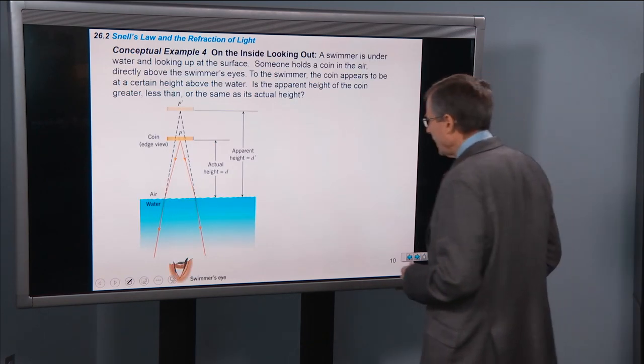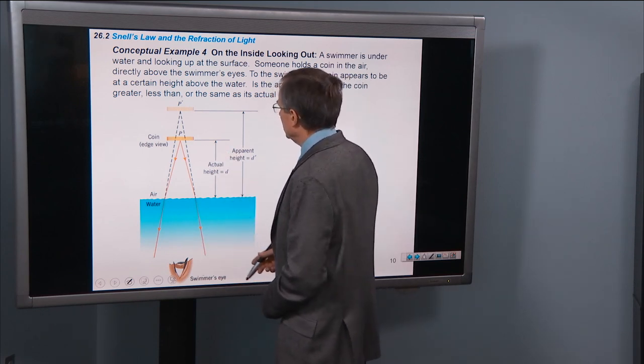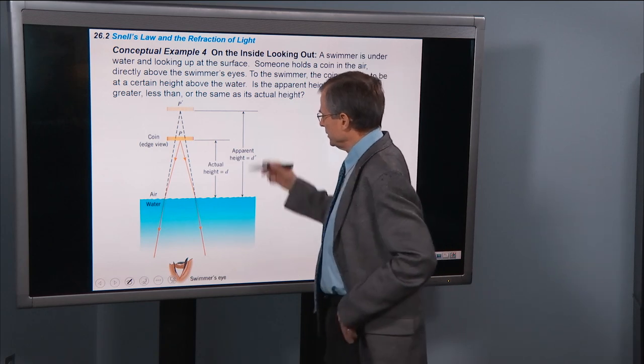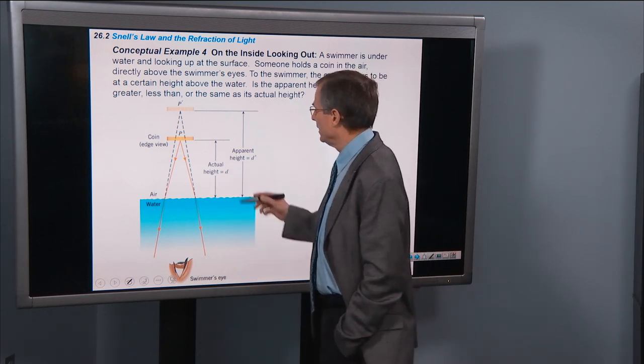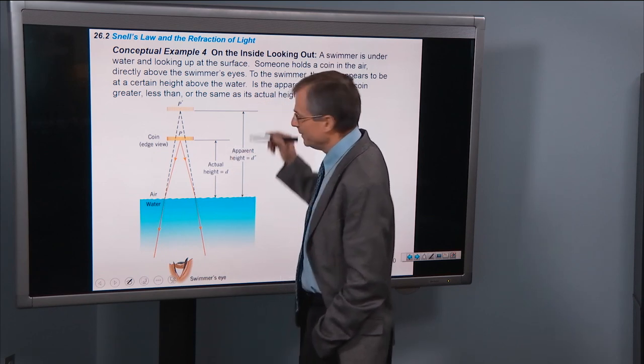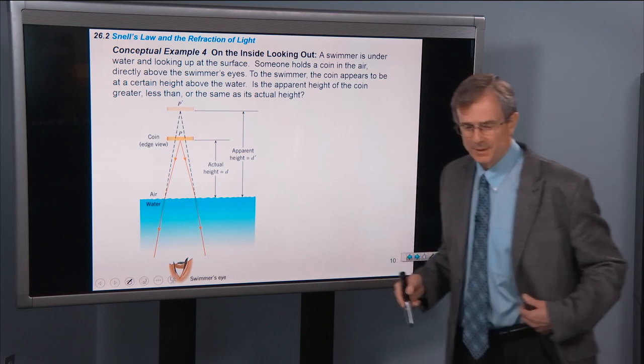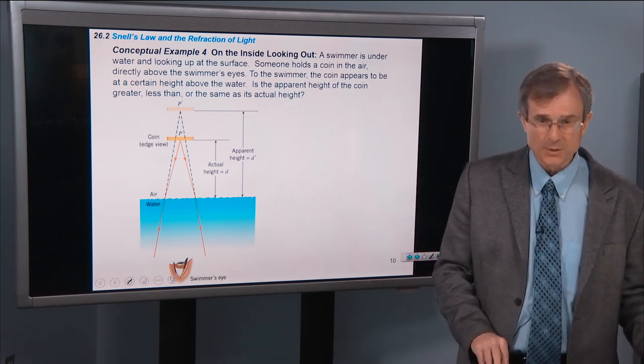On the inside looking out is just the opposite. So suppose you're swimming down here and you want to look at an object. It actually appears farther away in exactly the same relationship. But you reverse the N1 over N2 versus N2 over N1.